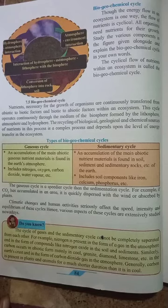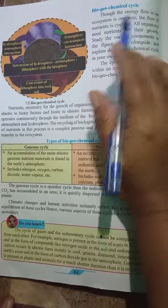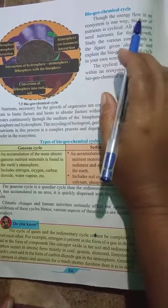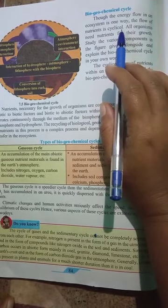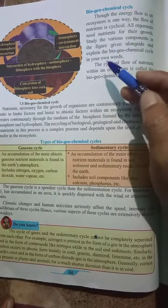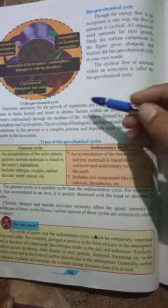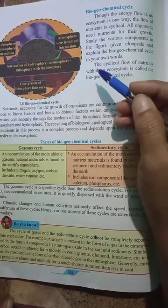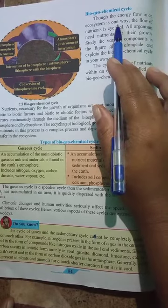Hello students. Let's continue our lesson on energy flow in an ecosystem, and the next topic: the biogeochemical cycle. The energy flow in an ecosystem is one way — we take energy from the sun, but it is not given back to the sun. That is why energy flow in an ecosystem is called one way.